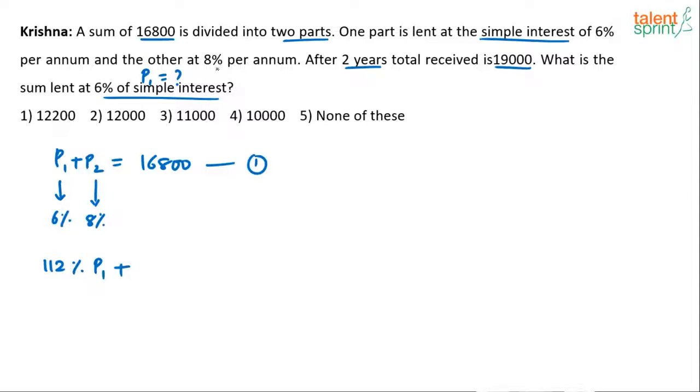P2 was lent at 8% per annum for two years, giving us 16% returns. So we have P2, which is 100%, plus 16% earning, making 116% of P2. This total equals 19,000.